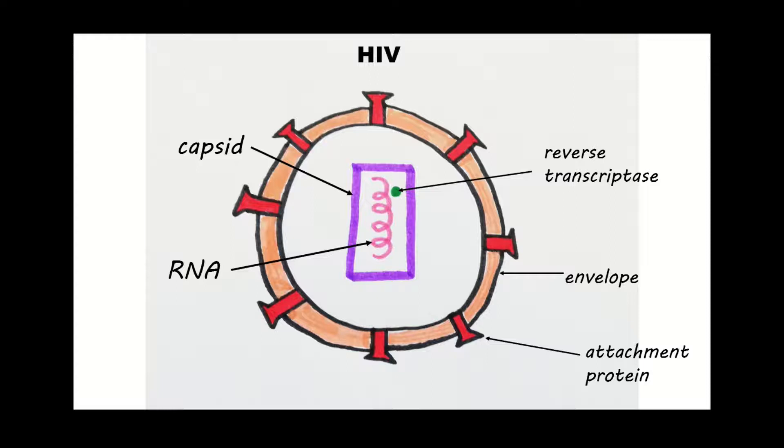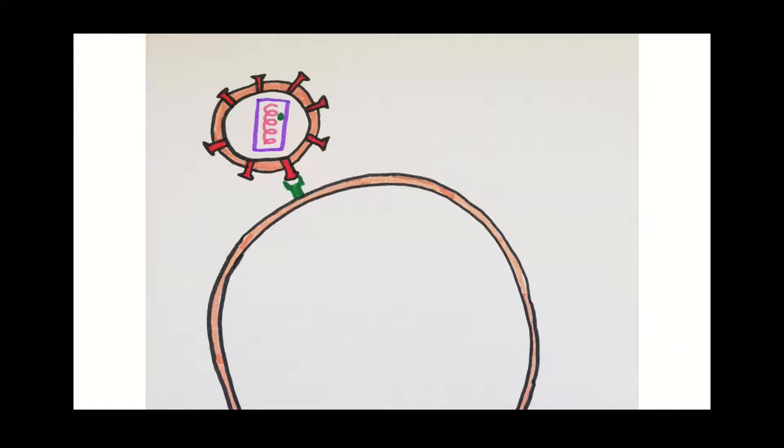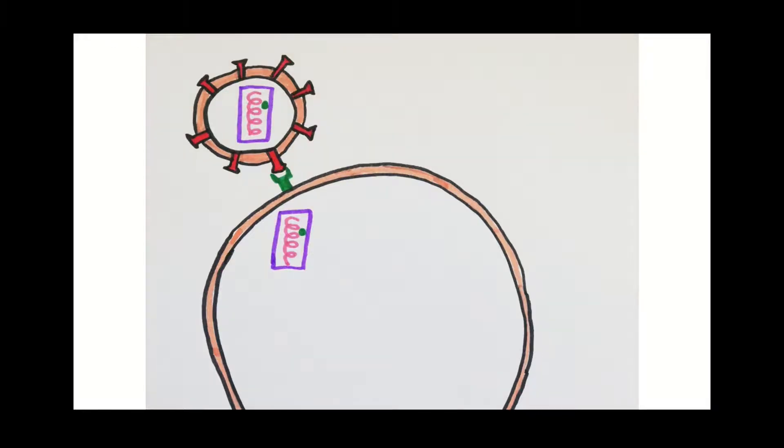Let's see how the HIV virus replicates. First the virus uses its attachment proteins to bind to a receptor on the surface of a helper T cell. Helper T cells are extremely important in the immune response. You can find out more about them in the immune response video. Next the virus releases its capsid into the T cell.